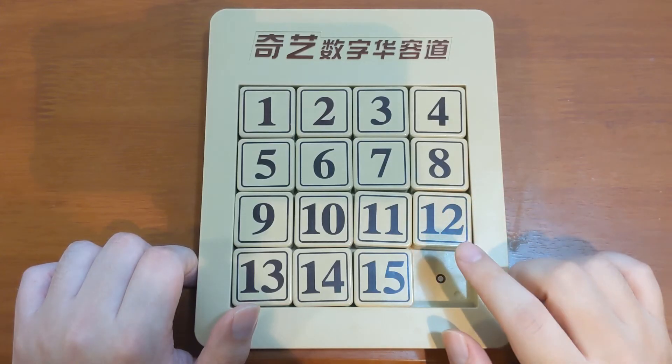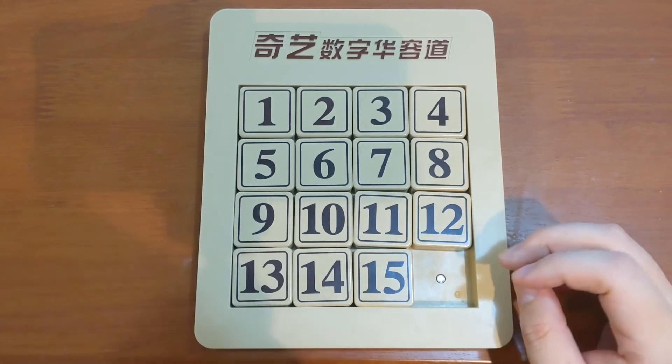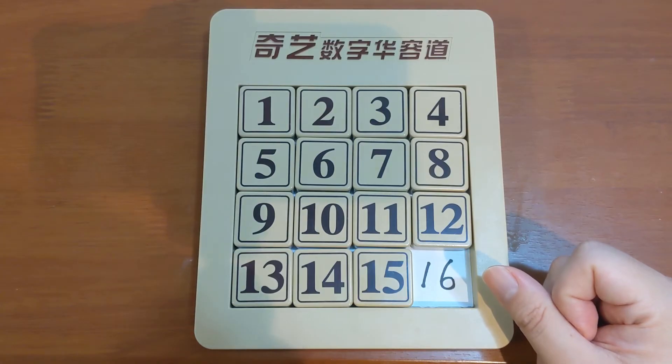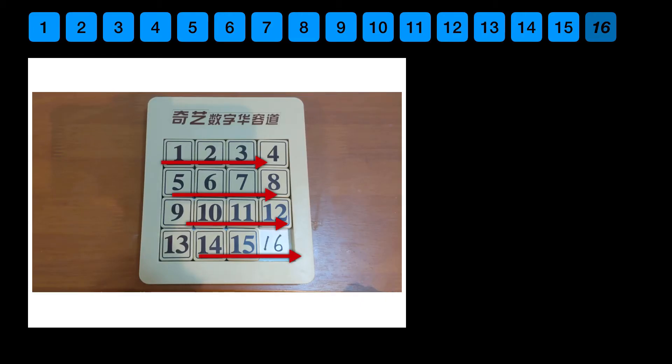Back to this 15 puzzle. We can calculate its rage as well. But the first thing we need to do is to treat the empty space as 16. We look at the tiles as a sequence of numbers. In the order of left to right, top to bottom. And the empty space is 16, even if it's not a tile.